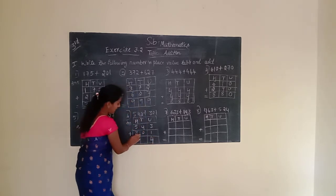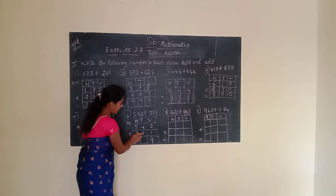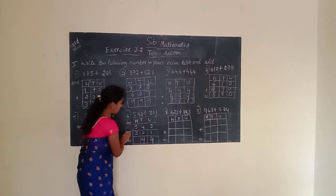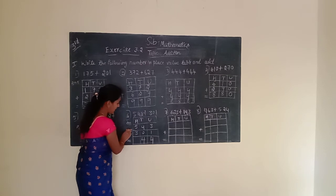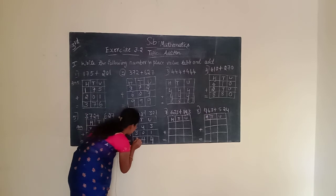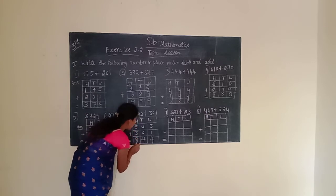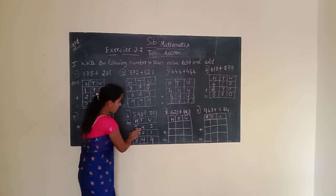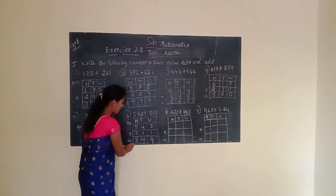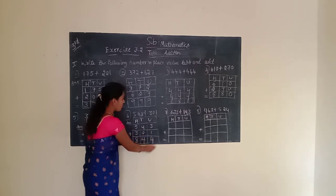Next, move to the tens place. Tens place is having 4 and 0. 4 plus 0 is 4. We have to write 4. Next, move to the hundreds place. Hundreds place is having 5 and 3. 5 plus 3 is 8. We have to write 8. Given number is 543 plus 301 equals 844.